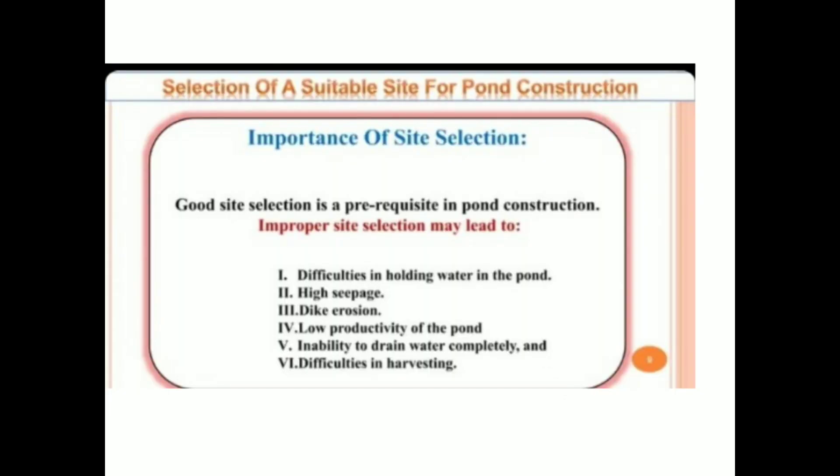The quarantine pond is used to verify that fish are not infected. Fishes that are diseased or suspected to be susceptible to disease are separated and kept in a quarantine pond. This pond is used to treat diseased fish from other ponds.